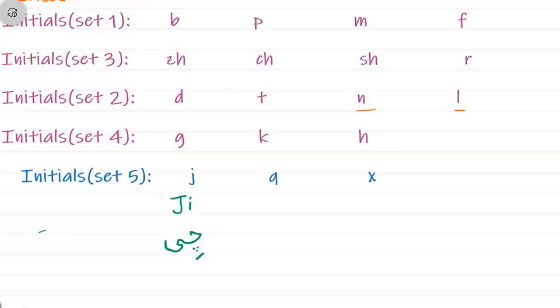The last initial from this set five is x. It is similar to x from English but it is going to pronounce as sh. Read after me: x, x. It can be written like this. Now read after me: j, j, q, q, x, x.